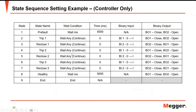We need to use the RTMS software and configure the state sequences for testing the auto-recloser. Here we have a table to summarize the configuration of each state. We have State 1, set for pre-fault — here is the wait condition and the time. These values may depend on your test requirements. The binary output is used to simulate your breaker status.